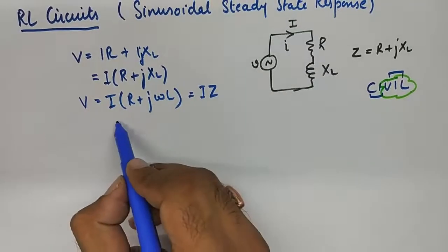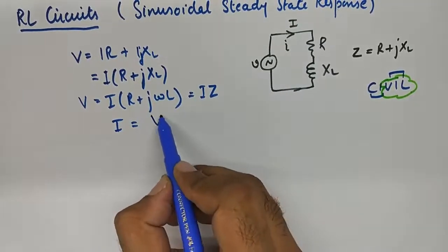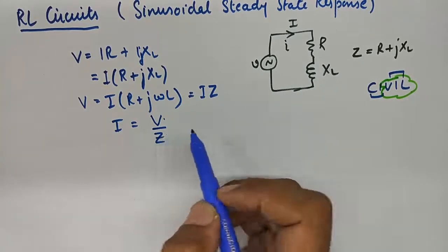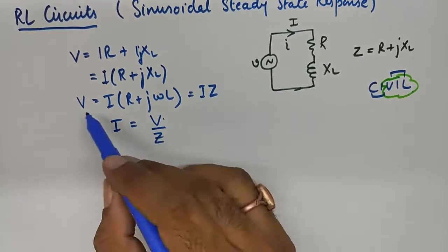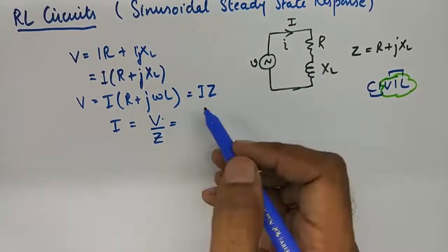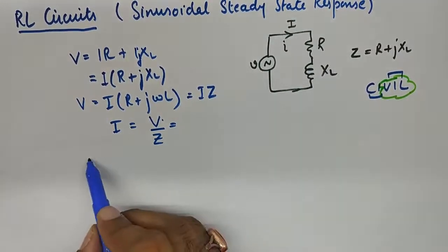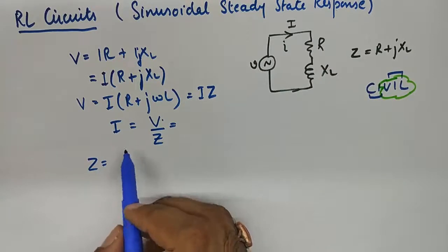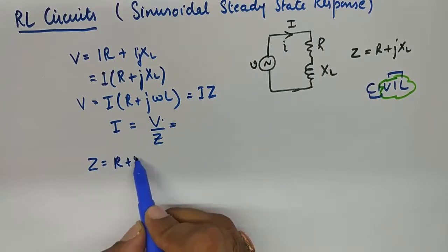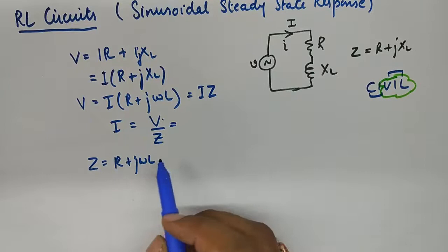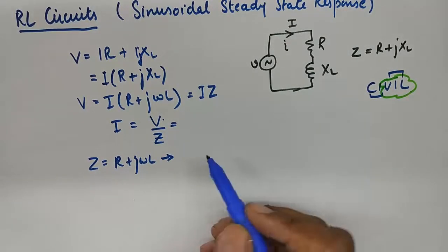And from here, if I was to calculate I, I can simply take the impedance in the denominator on the other side, which is pretty simple. But if I was to formulate Z, Z is R plus j omega L, which is a complex quantity represented in rectangular format.